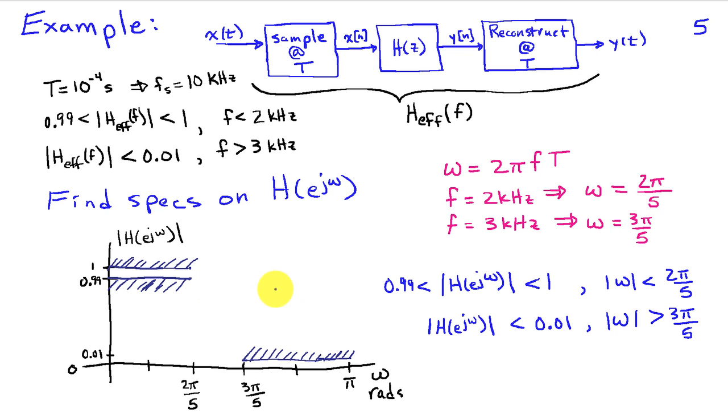Our tolerance diagram for this particular filter looks something like this, where for frequencies less than 2 pi over 5, we require that the gain of the filter be between 0.99 and 1. And then for frequencies greater than 3 pi over 5, we require that the gain of the filter be less than 0.01.